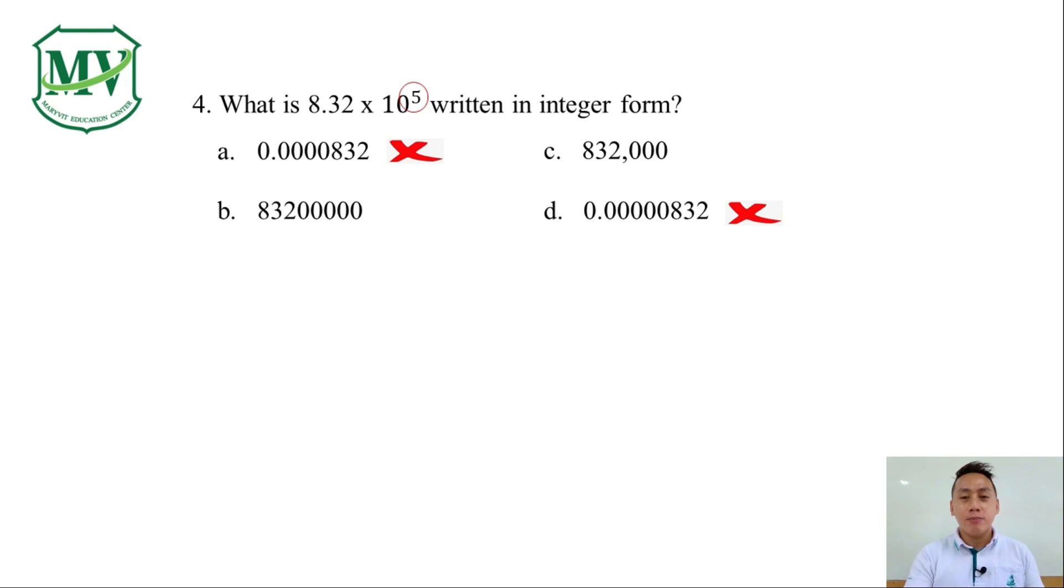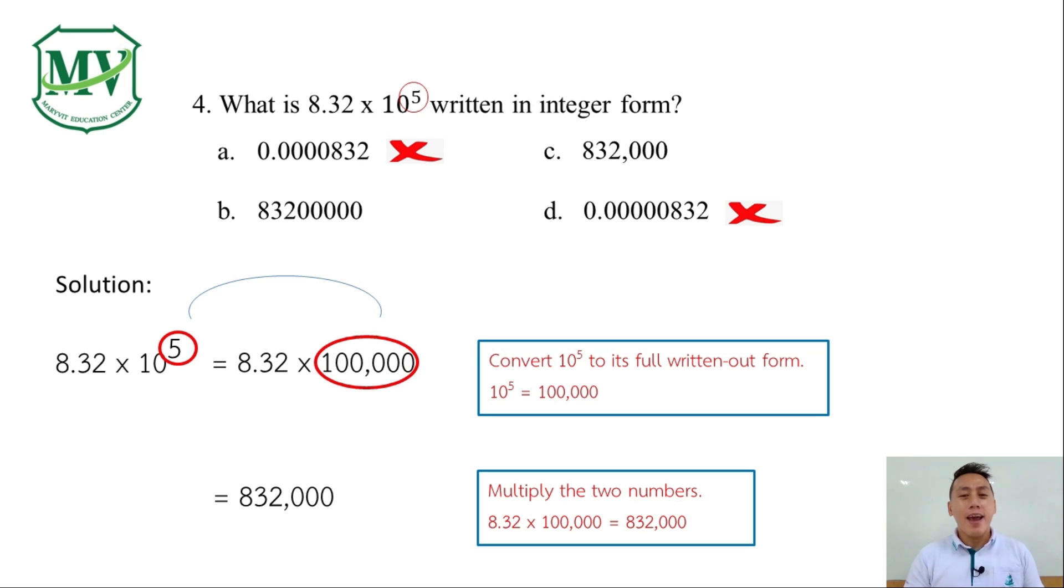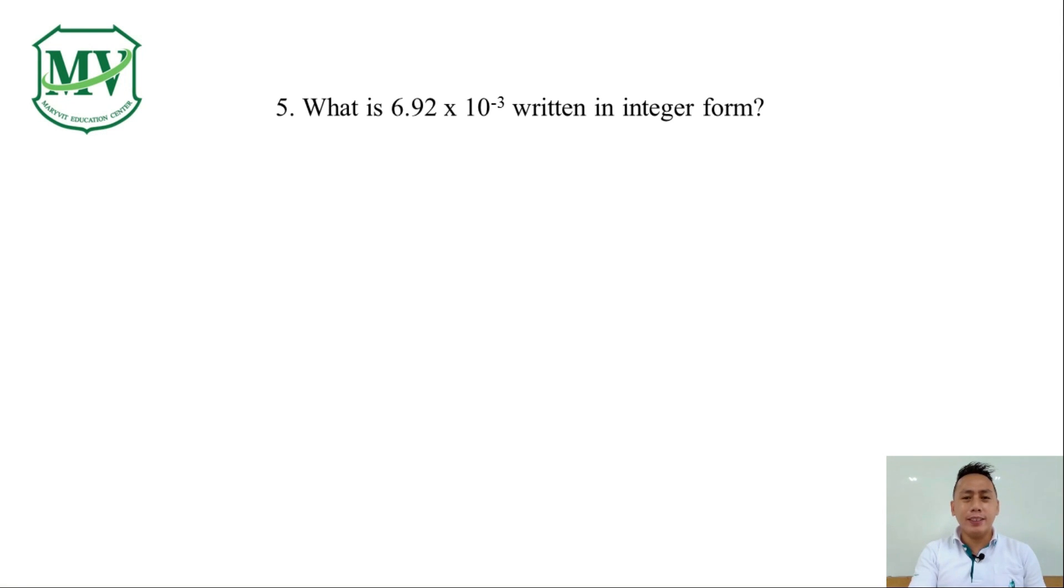We can find the answer by doing the solution. We can convert first 8.32 x 10 raised to the power of 5 into standard form. Then write 10 raised to 5 to its full written out form. That's 100,000. And then multiply the two numbers. 8.32 x 100,000 is equal to 832,000 and that's our final answer. That's letter C.